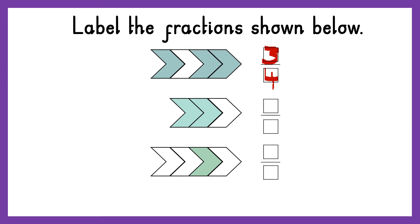So that fraction is three out of four, or three quarters. The next shape has one, two, three parts altogether, and one, two of them are shaded. So my fraction here is two out of three, or two thirds. My final fraction has one, two, three, four parts altogether, and just one of them is shaded. So my final fraction is one out of four, or a quarter.